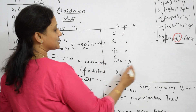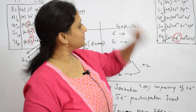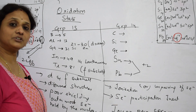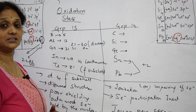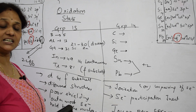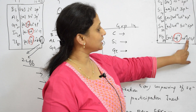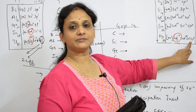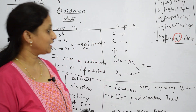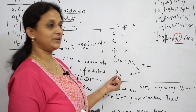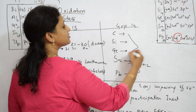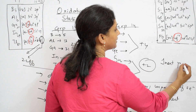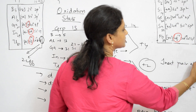Now for group 14 — it shows +4 at the top, and here only +2. The same reason applies: 4D and 4F have diffused structures and poor shielding, so they will not allow the S electrons to participate. Lead basically has 6s2 6p2 and should show +4, but due to the inert pair effect, Sn and Pb have stable +2 configurations. All the upper elements have +4 configurations; only Sn and Pb show +2 because of the inert pair effect.